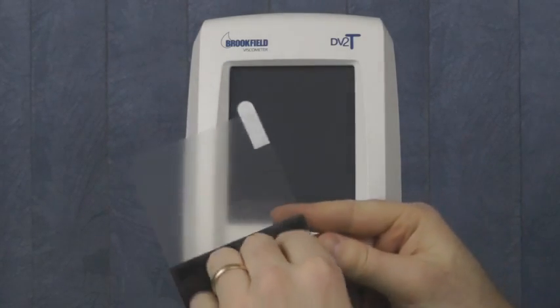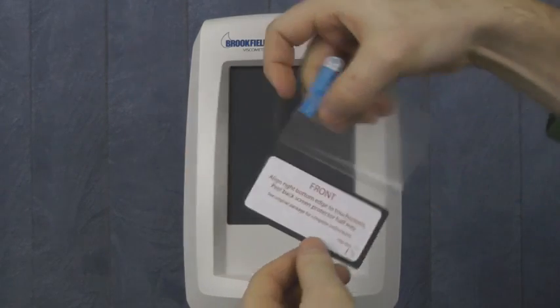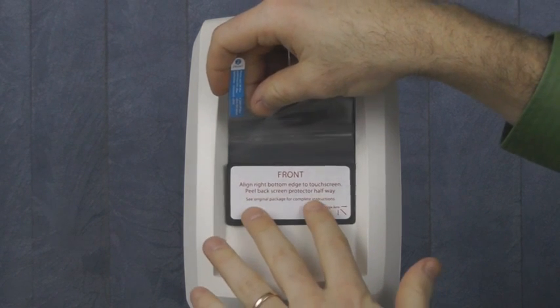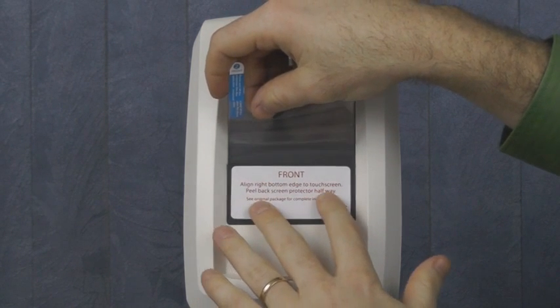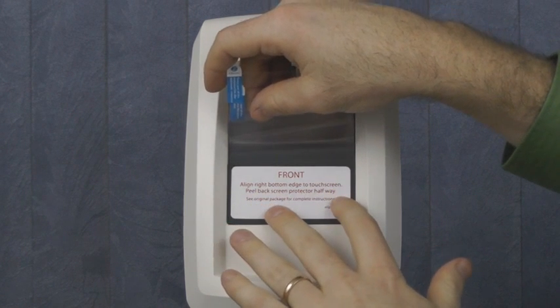Remove the bottom half of tab 1. You then align the foam backing of the protector to the bottom right hand corner of the screen. Alignment is critical. If the screen protector is not aligned properly, you may lose functionality of the touch screen.